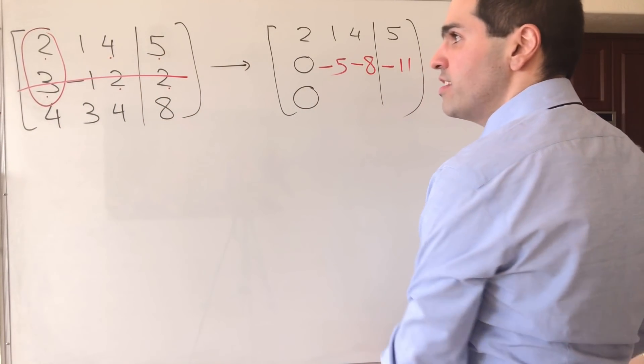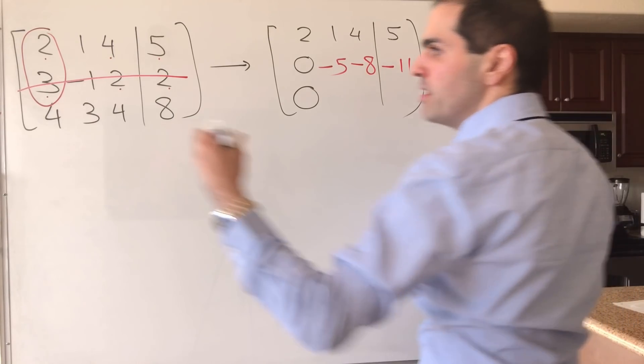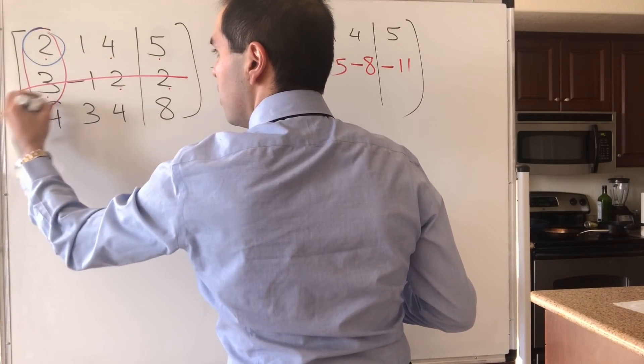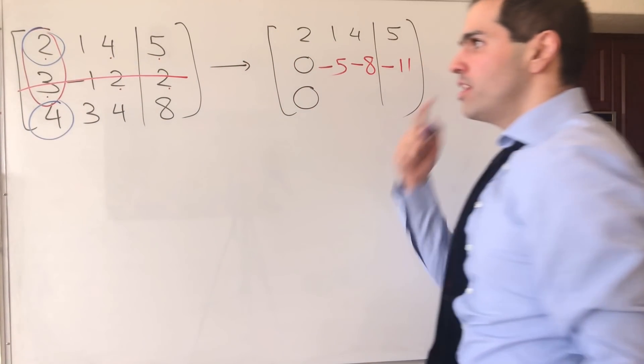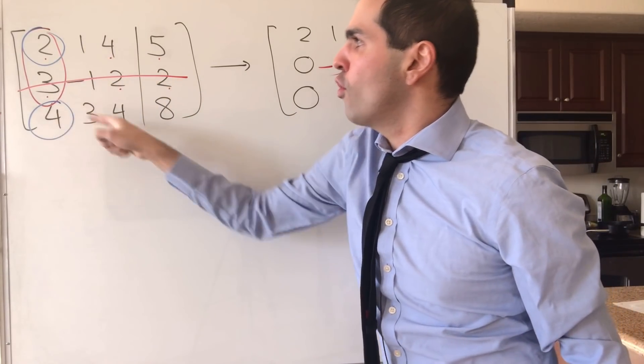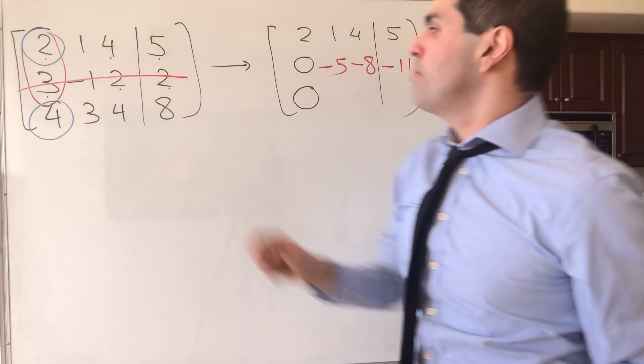And then you just rinse and repeat. So you keep this 2, 4. And now take the determinant of 2, 1, 4, 3. So 6 minus 4, that is 2.